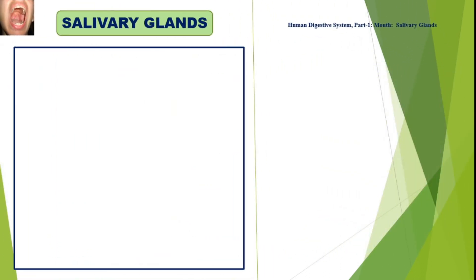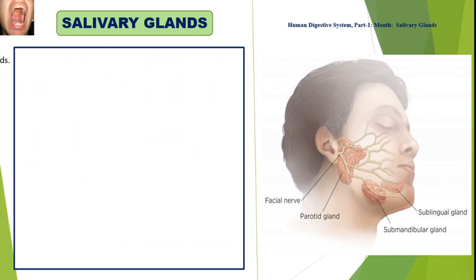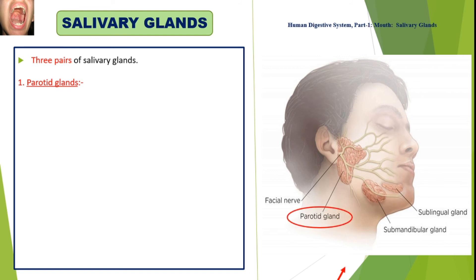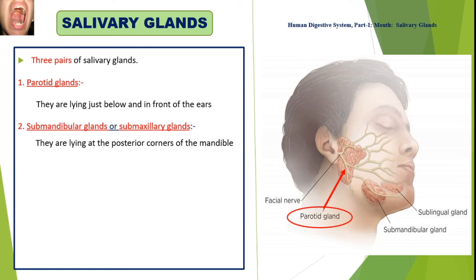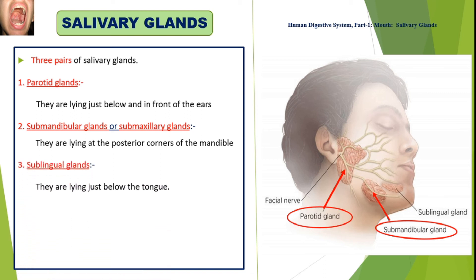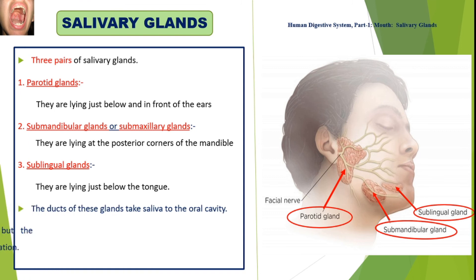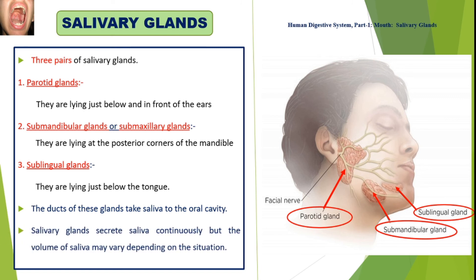We have three pairs of salivary glands. The first are the parotid glands, lying just below and in front of the ears. The ducts of these glands carry saliva to the oral cavity. Salivary glands secrete saliva continuously, but the volume of saliva may vary depending on the situation.